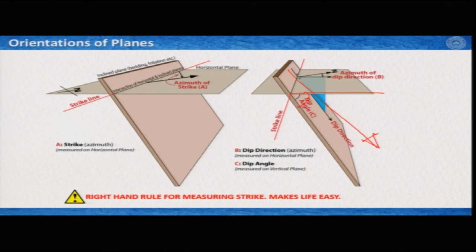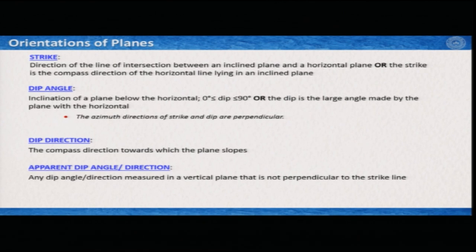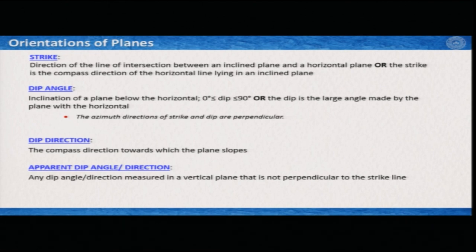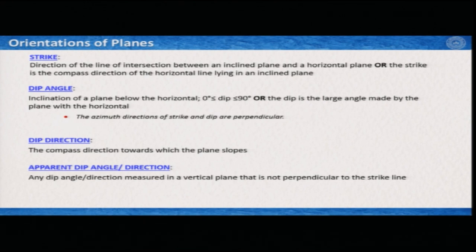Strike is the direction of the line of intersection between an inclined plane and a horizontal plane. It can also be defined as the compass direction of the horizontal line lying in an inclined plane. Dip angle is the inclination of a plane below the horizontal, ranging from 0 to 90 degrees; it is the largest angle made by the plane with the horizontal. Dip direction is the compass direction towards which the plane slopes. If you do not measure the dip angle perpendicular to the strike line, these are apparent dip angles and apparent dip directions.